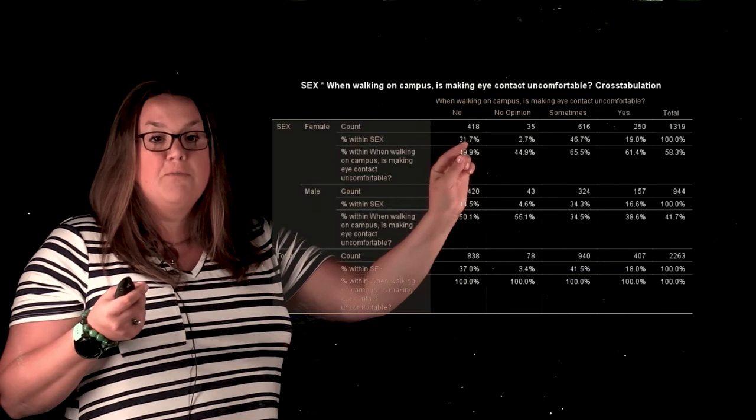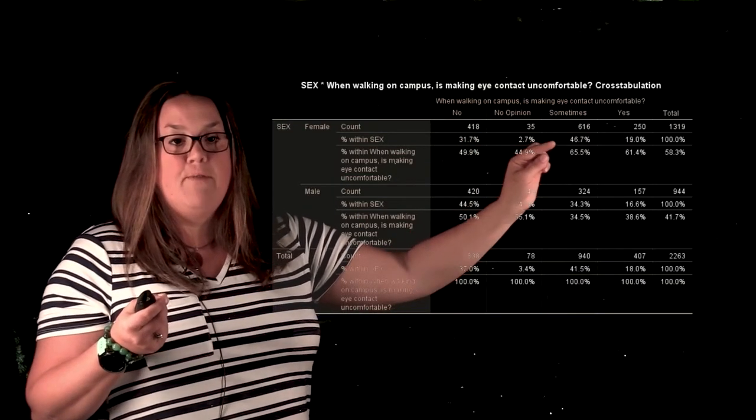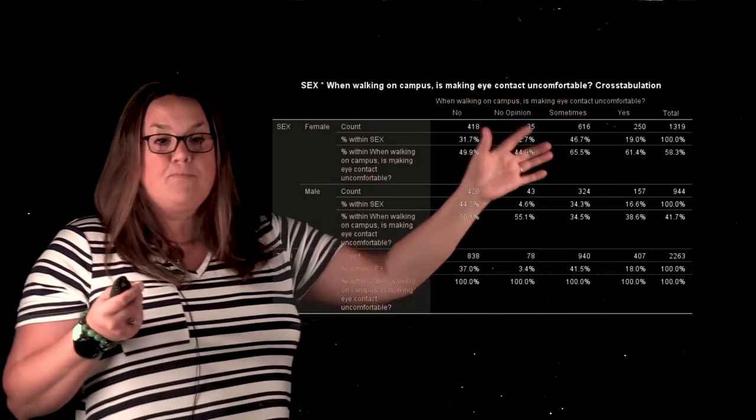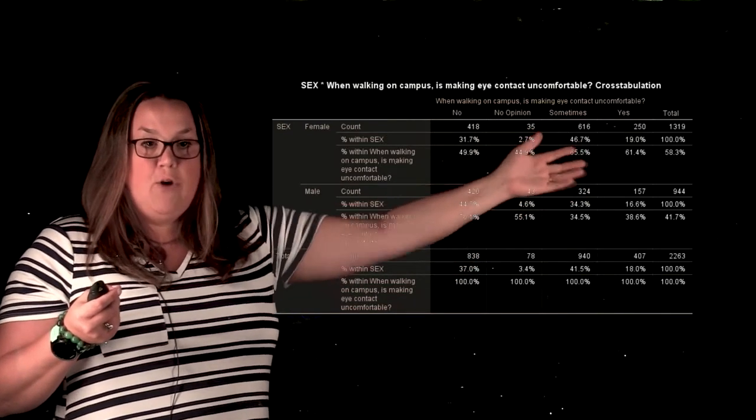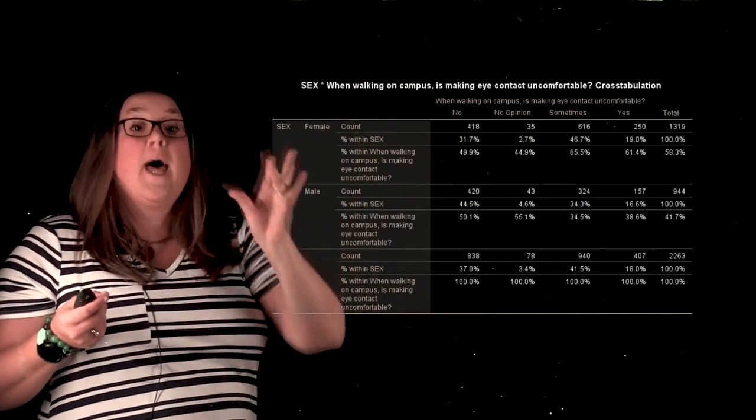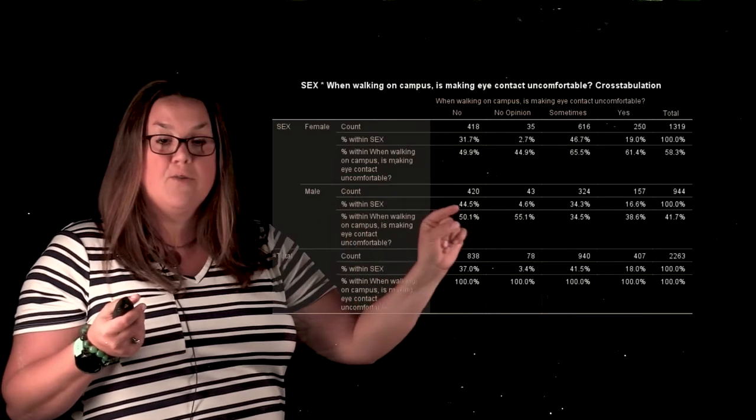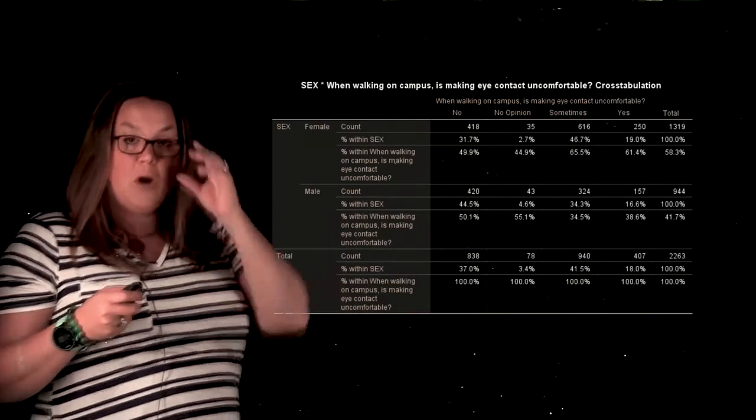31.7%, 2.7%, 46.7%, etc. And they will total to 100% for the females, and then the same would be true for the males. So this percent within sex is going to be how the height of the bars are measured.